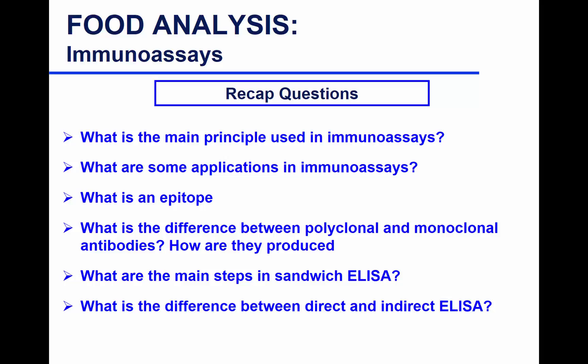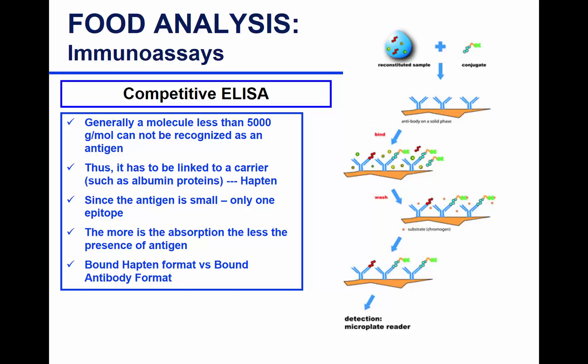Sandwich ELISA can be direct or indirect. We stopped at this slide and wanted to move on with competitive ELISA. Competitive ELISA is usually used when your antigen is very, very small compared to a big protein — for example, if your antigen is like a mycotoxin, it's very small in molecular weight, less than 5,000 daltons. In this case, the ELISA you would use is competitive ELISA.